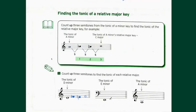For E minor, count up three semitones: E goes up to F, then F sharp, then G. So G major is the relative major of E minor. Finally, for A minor, count up: A goes to B flat, then B natural, then C. So C major is the relative major of A minor. That's it for this week — see you next time!